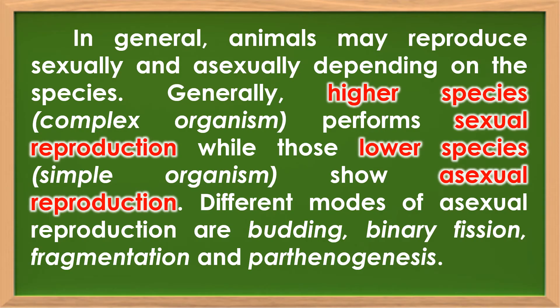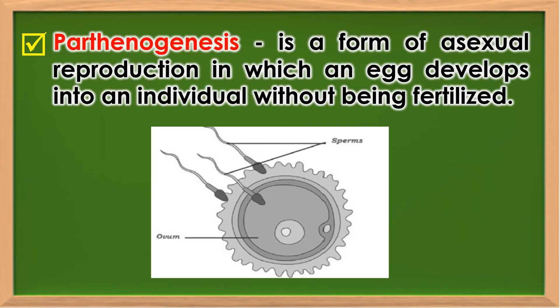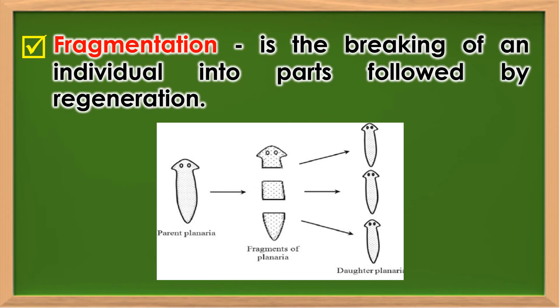Different modes of asexual reproduction are budding, binary fission, fragmentation, and parthenogenesis. Parthenogenesis is a form of asexual reproduction in which an egg develops into an individual without being fertilized. Fragmentation is the breaking of an individual into parts followed by regeneration.